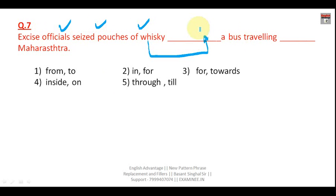Question seven: 'Excise officials seized pouches of whiskey _____ a bus traveling _____ Maharashtra.' They seized pouches of whiskey from a bus, so 'from' is correct. Since Maharashtra is a destination we are talking about, 'to' is the correct option. So here your answer is the first option — 'from' and 'to.'